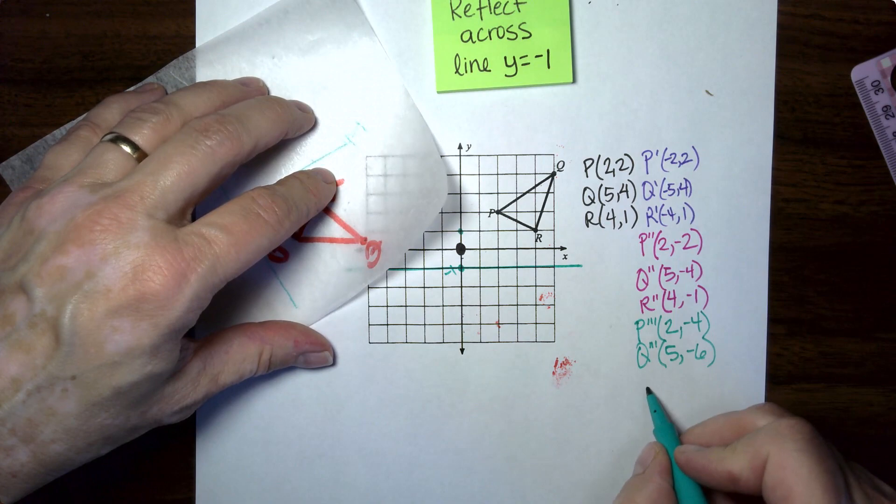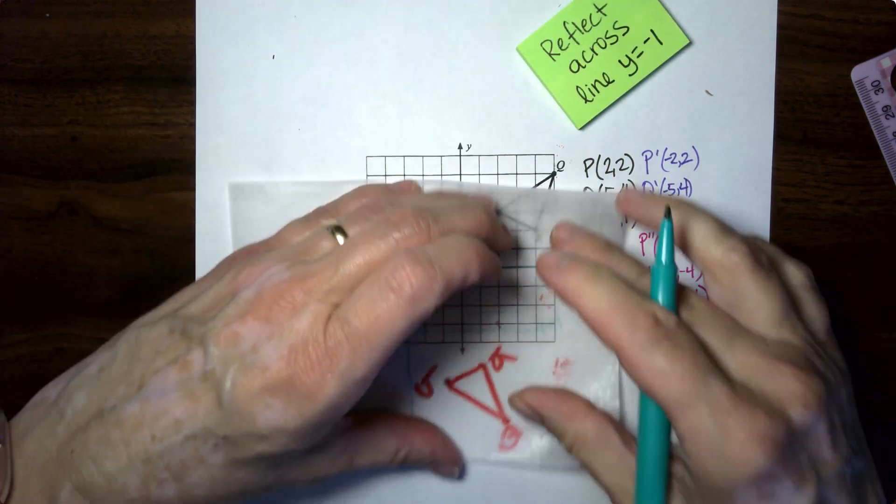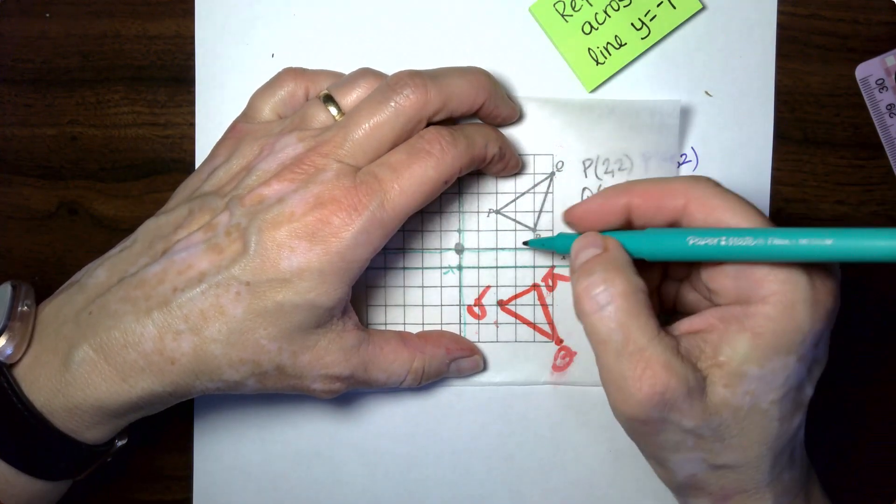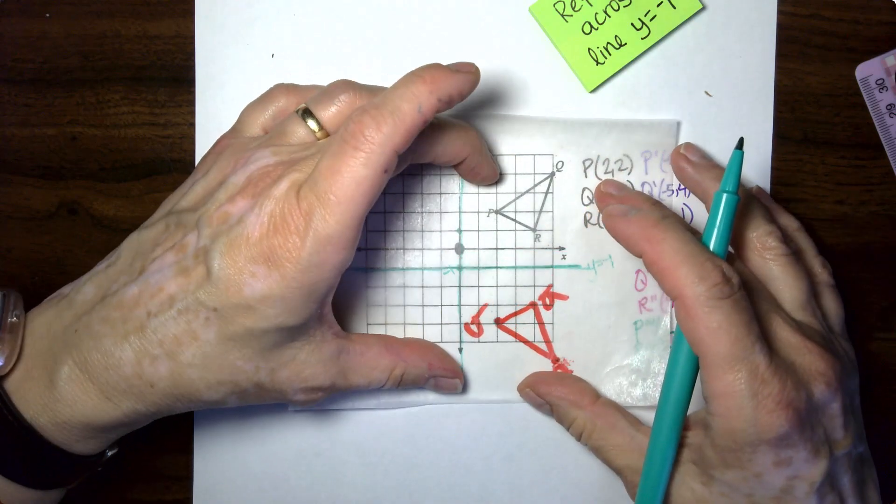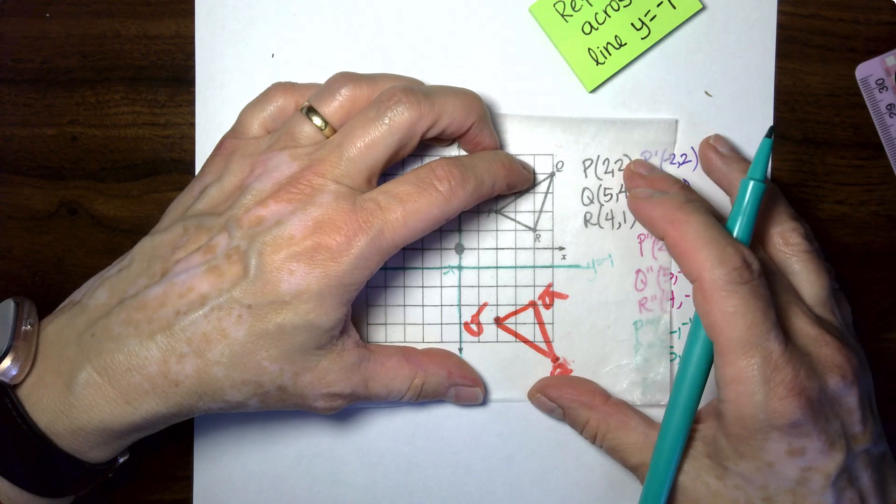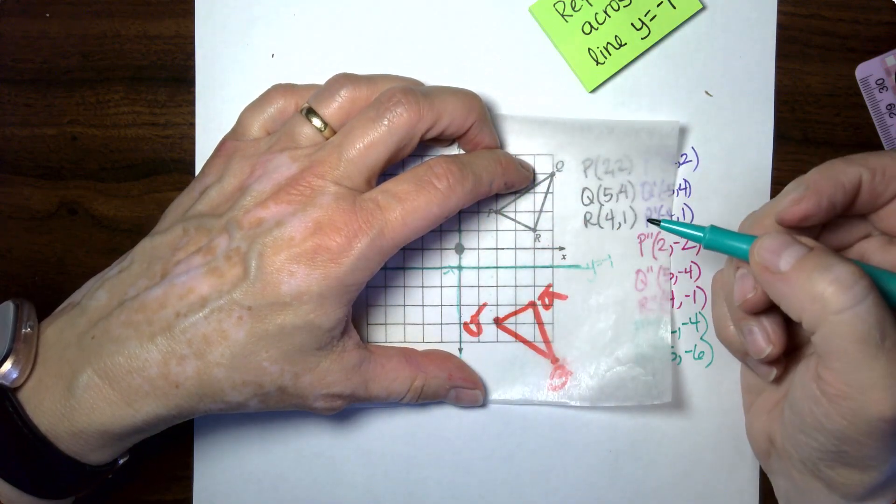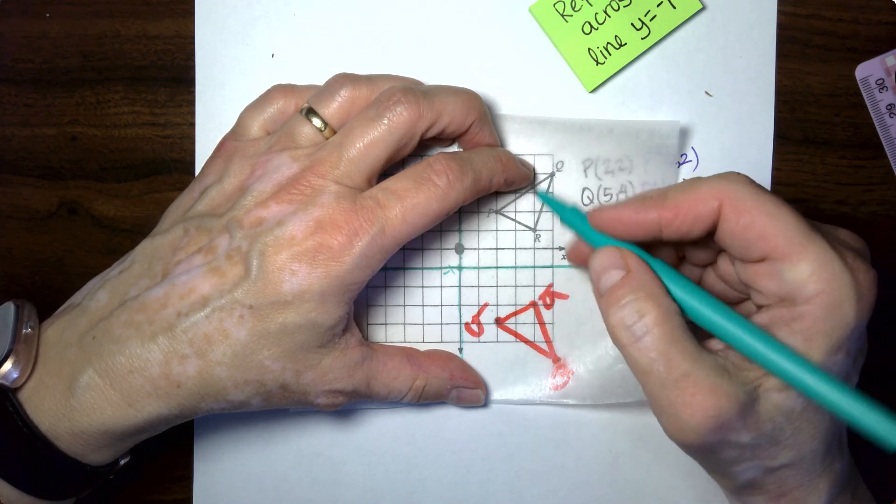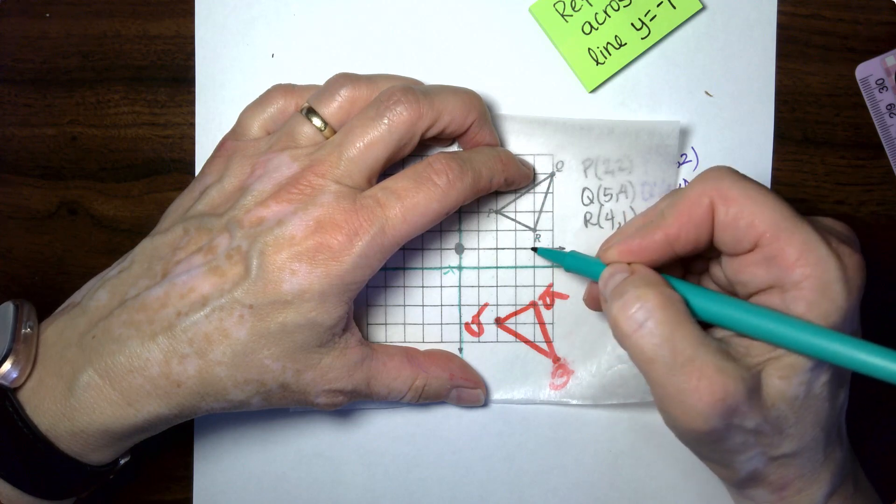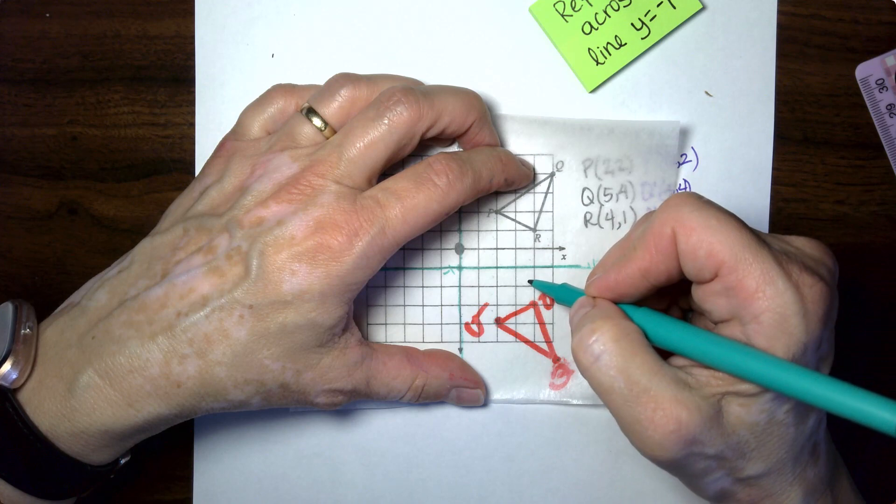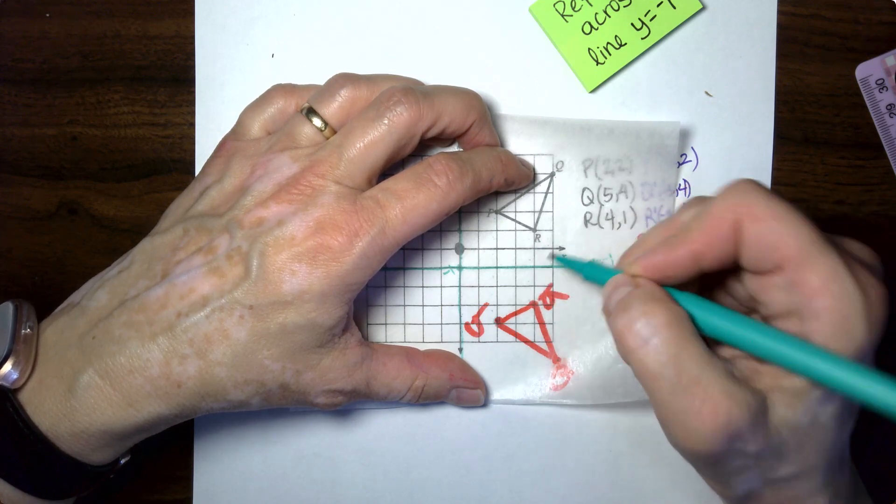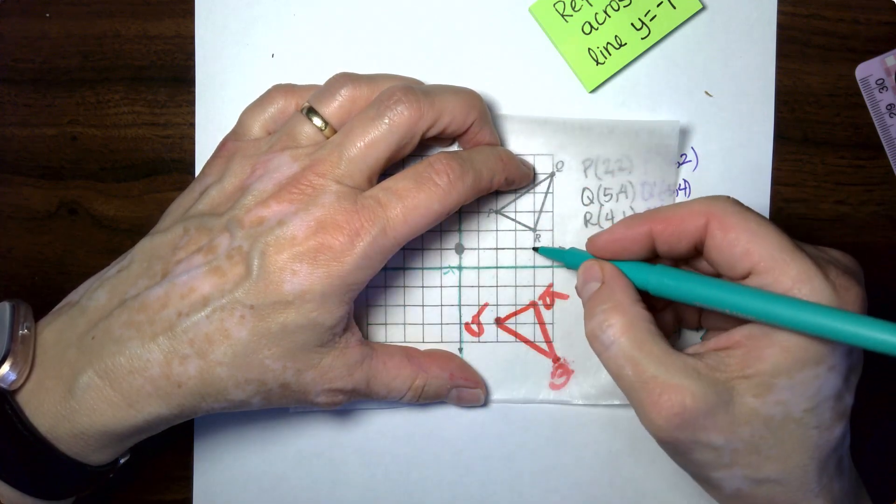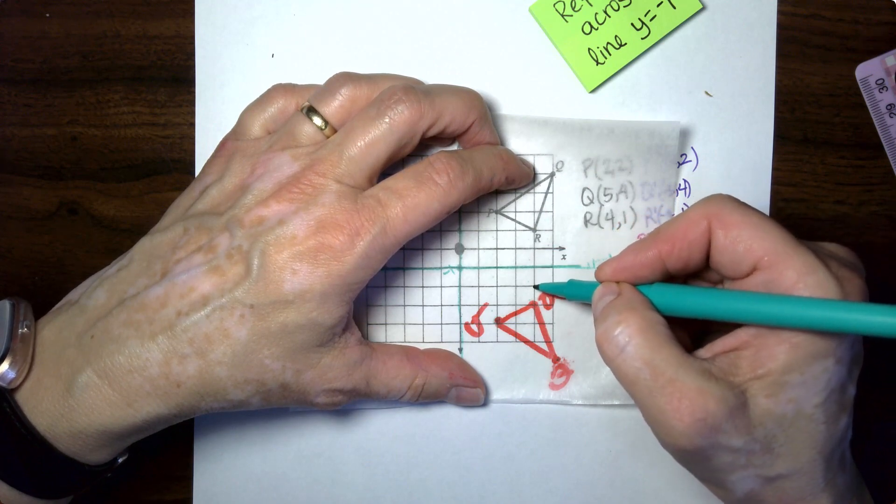And let's do R triple prime lining everything back up again. That one is right here. Okay. Nope. I didn't line it up right. There it is. You caught that. Didn't you go ahead and leave me a comment. If you're like, no, no, no. Alright. So here is our, here is our trip. Here's our reflection of R one, two boxes away from the line we're reflecting across. The new one is also two boxes away. The X stays the same. So that's going to be four. The Y is going to be now one, two, three, negative three.